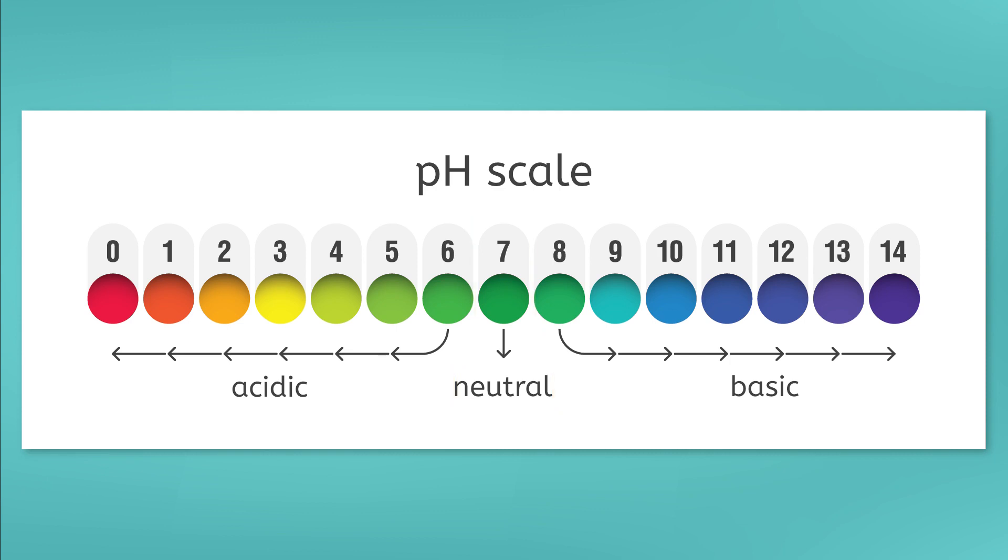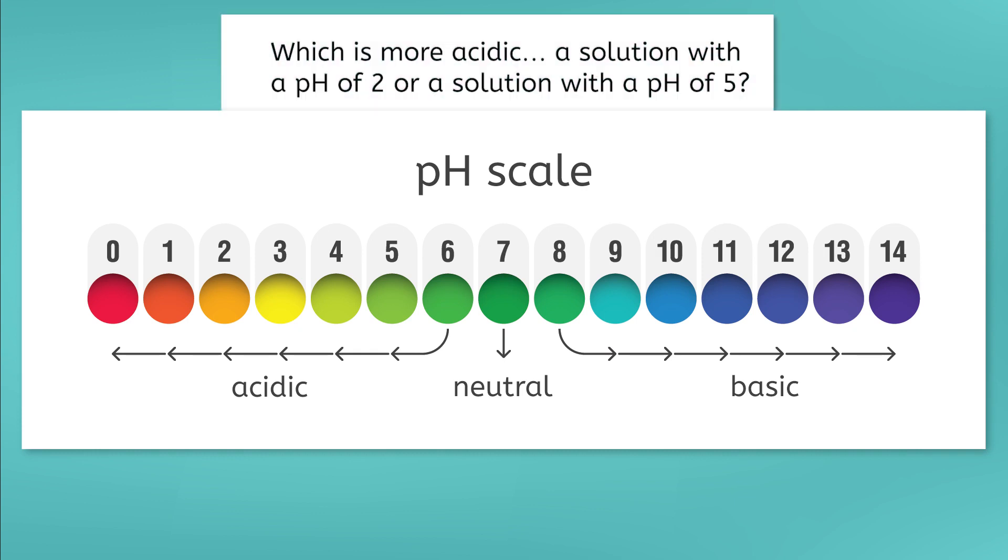pH values do not have units, and the farther from 7 a pH value is, the more acidic or basic the solution is. For example, if I have two acids, one with a pH of 2 and one with a pH of 5, the solution with a pH of 2 is considered more acidic, meaning it has more H⁺ ions in the solution.